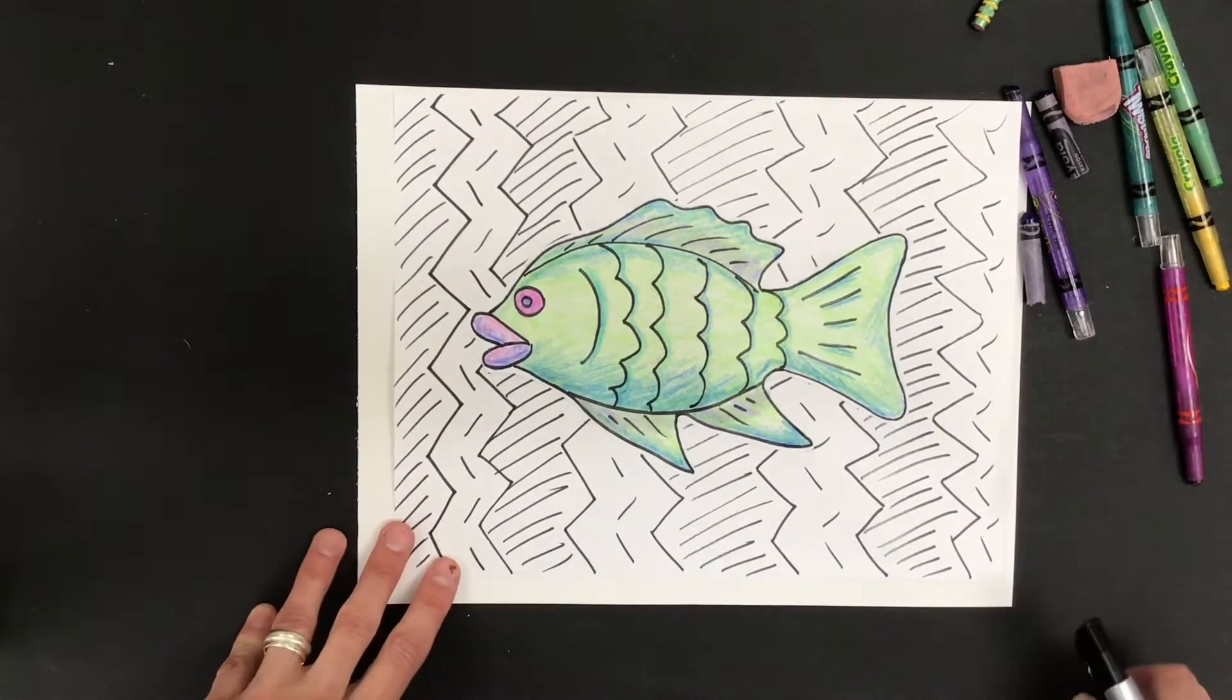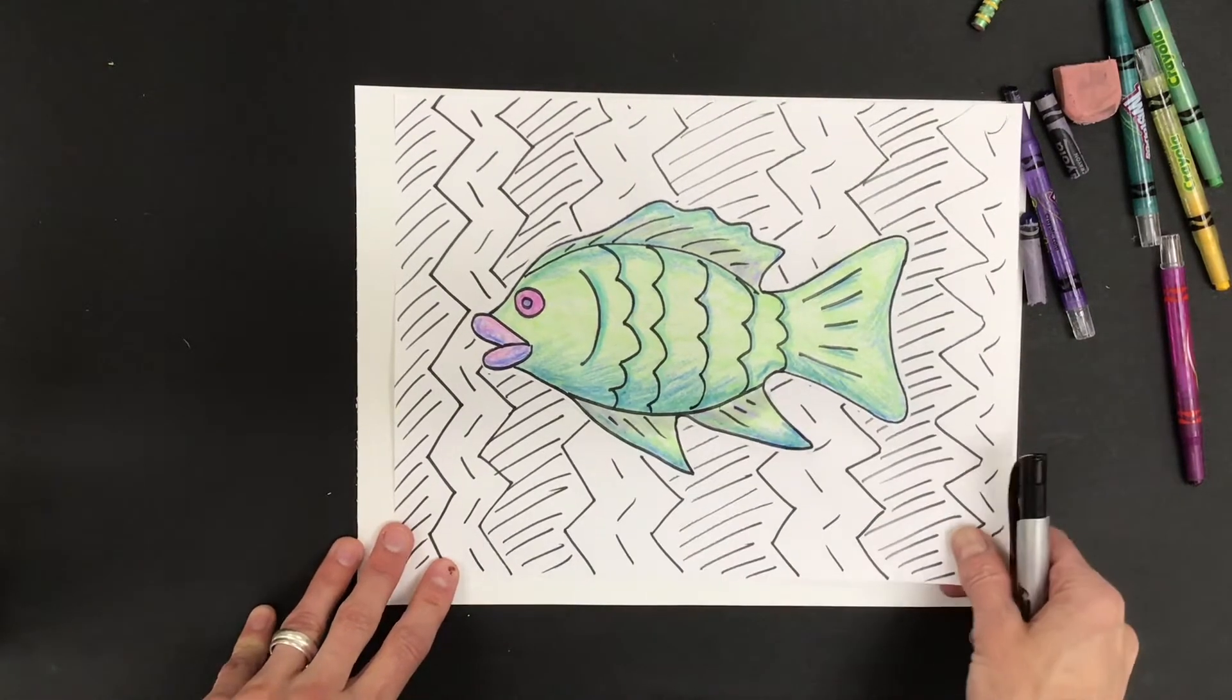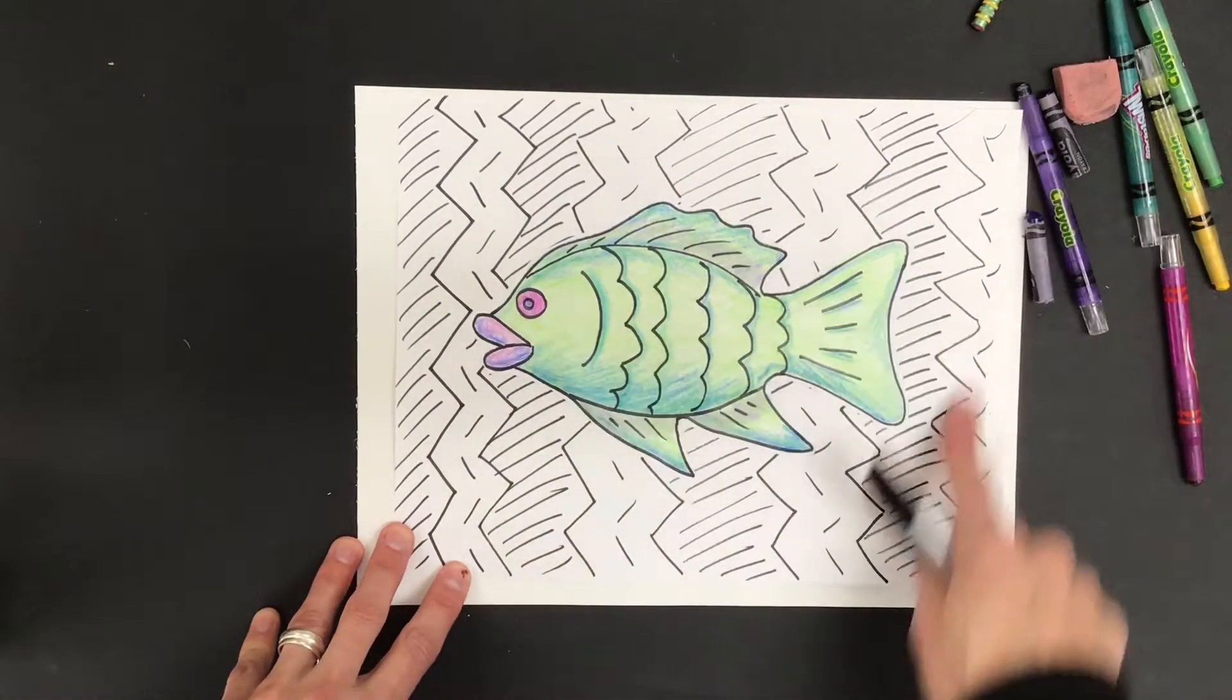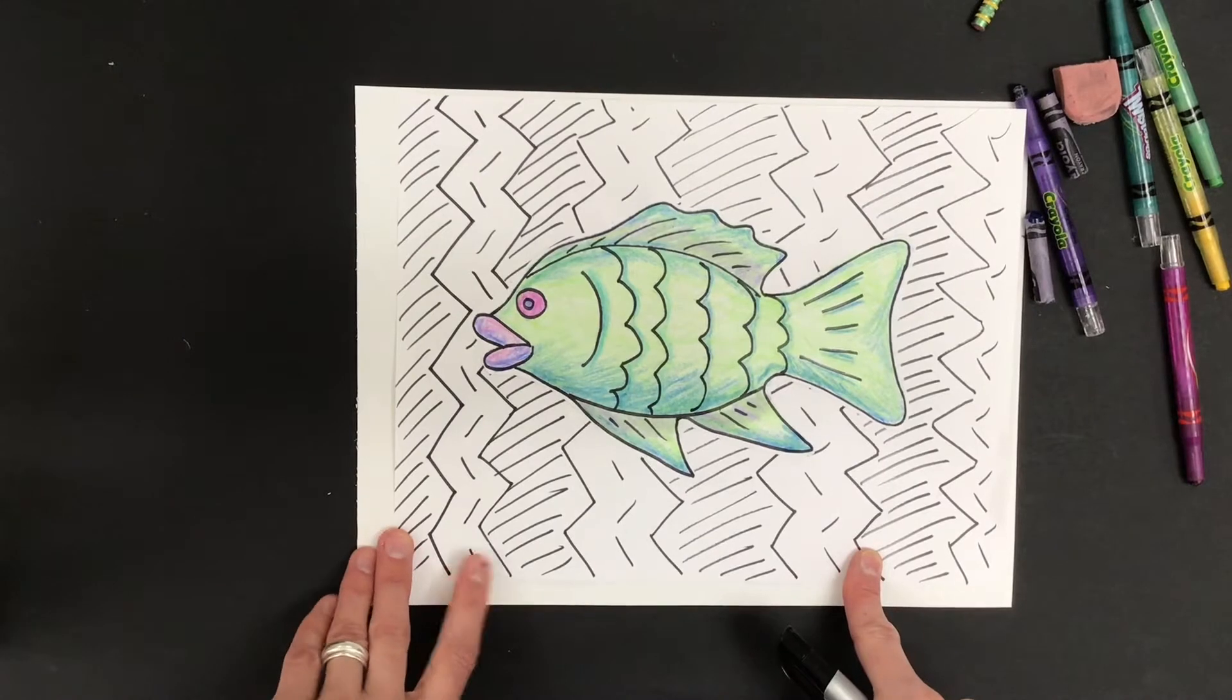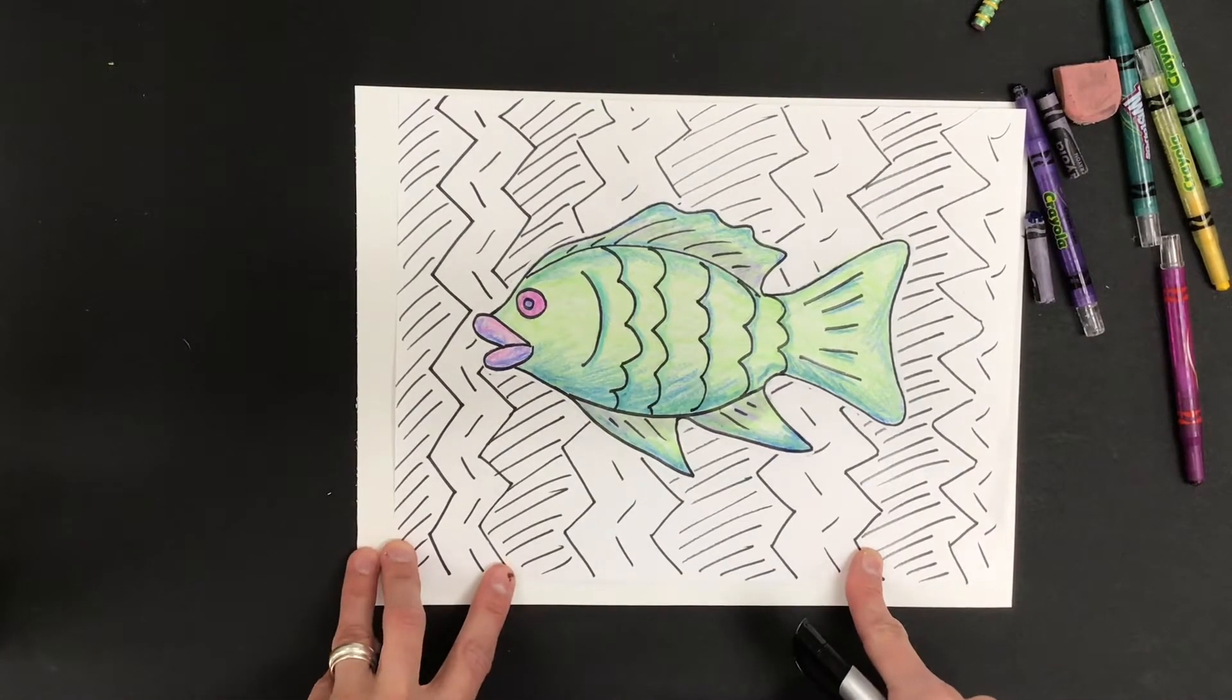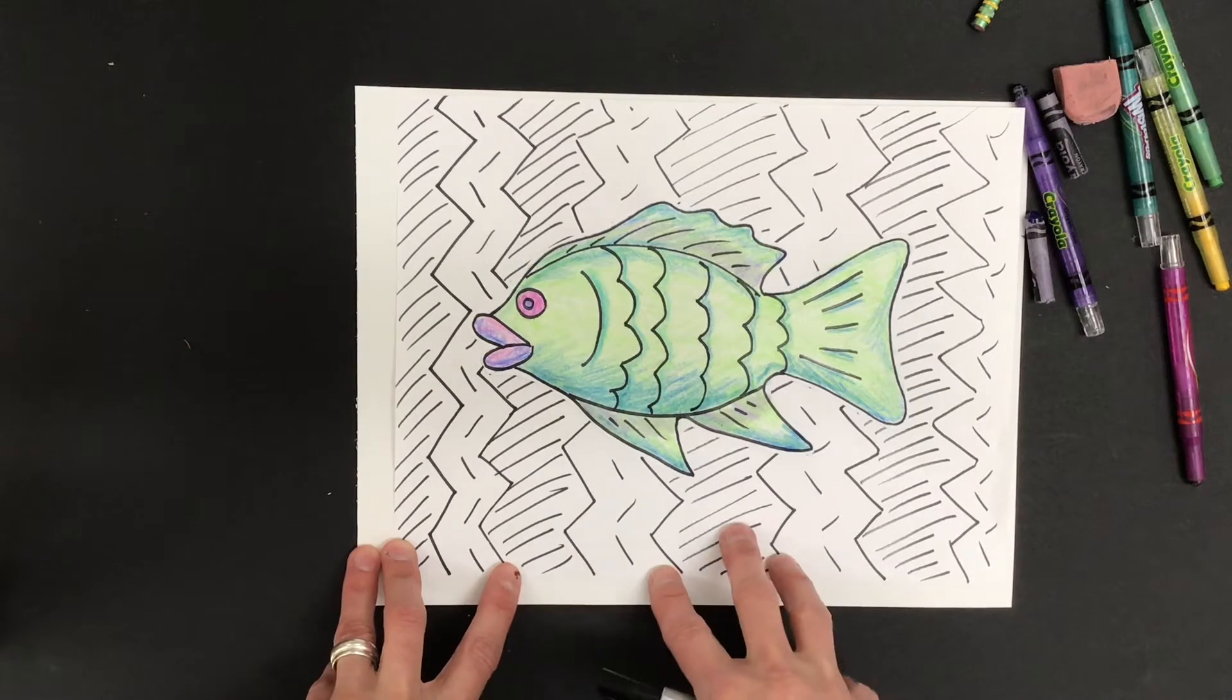Okay, step number two of our fish project. We are making a pattern for the background, so we're going to have that pattern be strictly black and white and we get to decide what lines and shapes we're going to use.